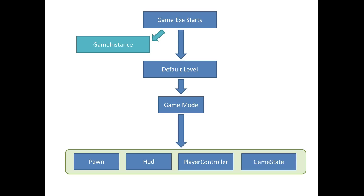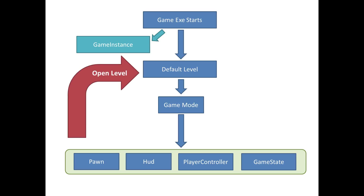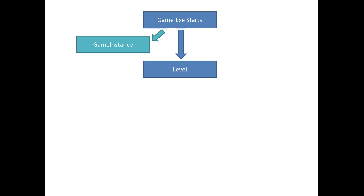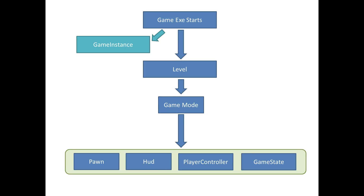At some point during gameplay something in the game will cause a win condition or a map change condition, and something will call open level. What open level does is essentially destroy everything that was already in the existing level and start the next level loading. Again, that level loads its game mode, and that game mode loads its own custom objects.